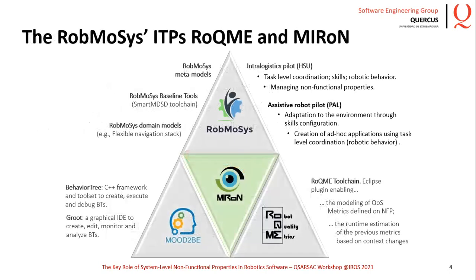The objective of the ROGMI and the Miron Integrated Technical Projects, both funded by the Horizon 2020 ROGMAS project, was to address these limitations, allowing designers to specify and manage non-functional properties both at design time and at runtime. On the one hand, ROGMI contributed a model-based framework enabling the modeling and runtime estimation of quality of service metrics defined on system-level non-functional properties, such as safety, performance, or resource consumption, among many others.